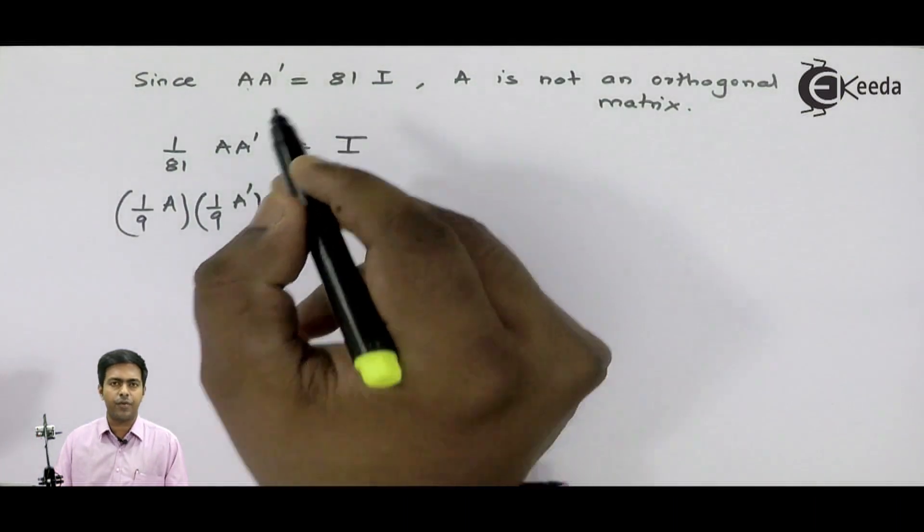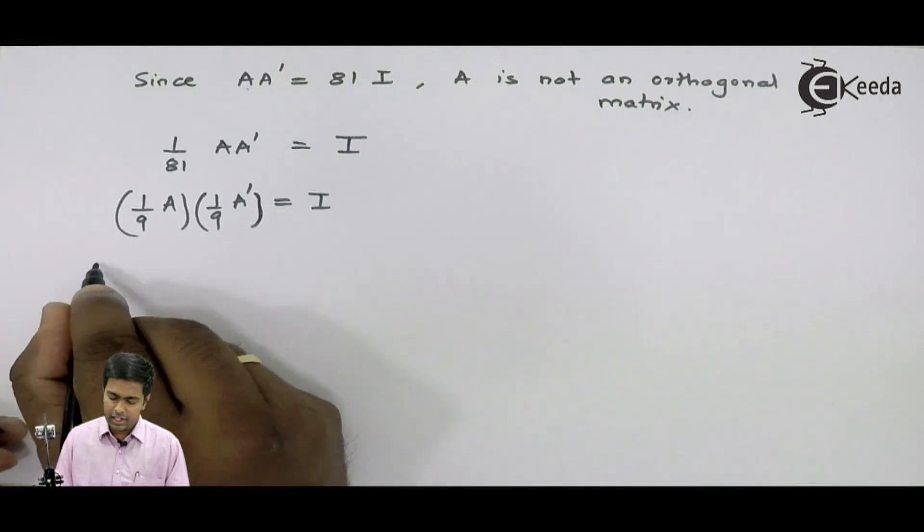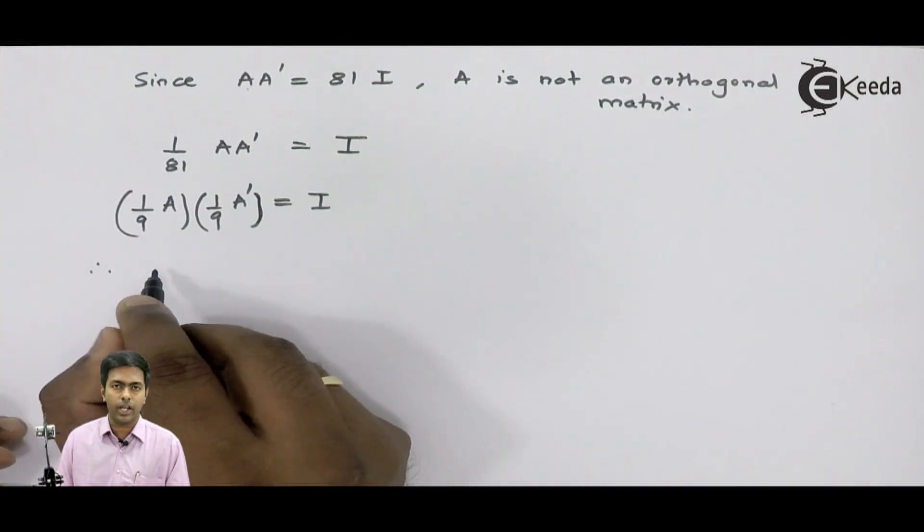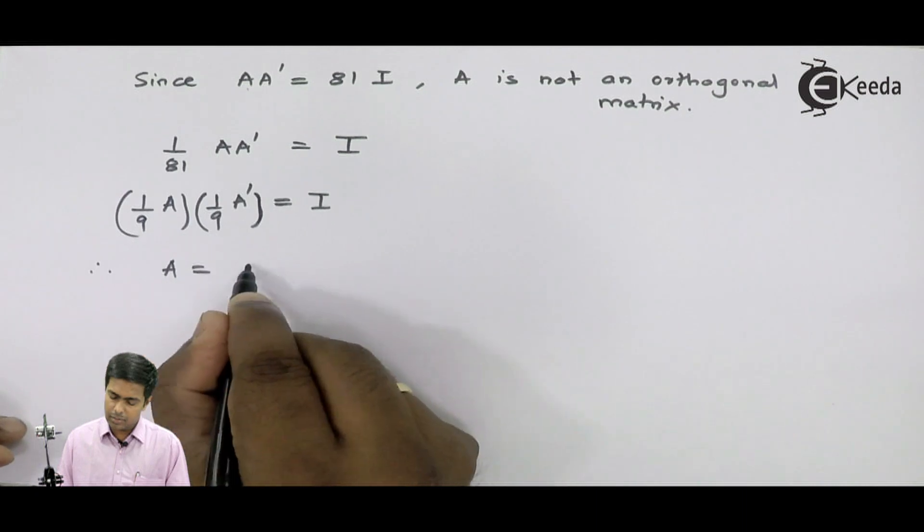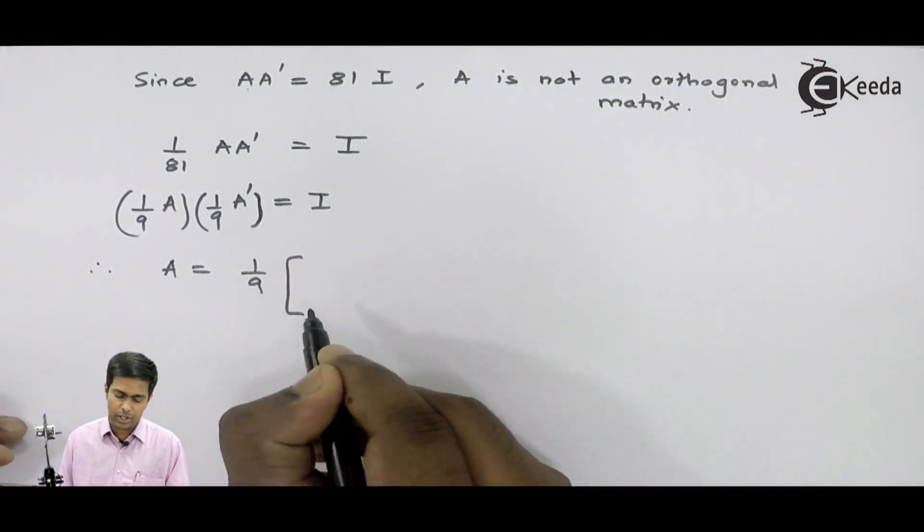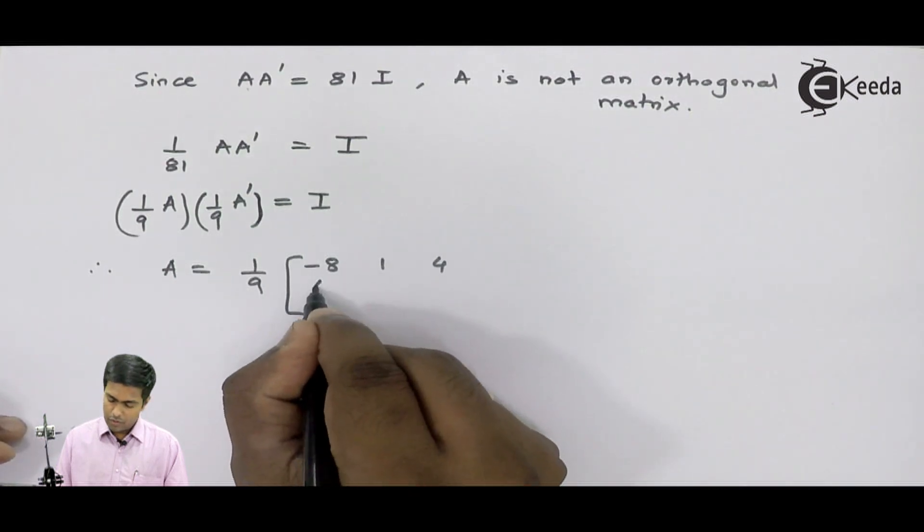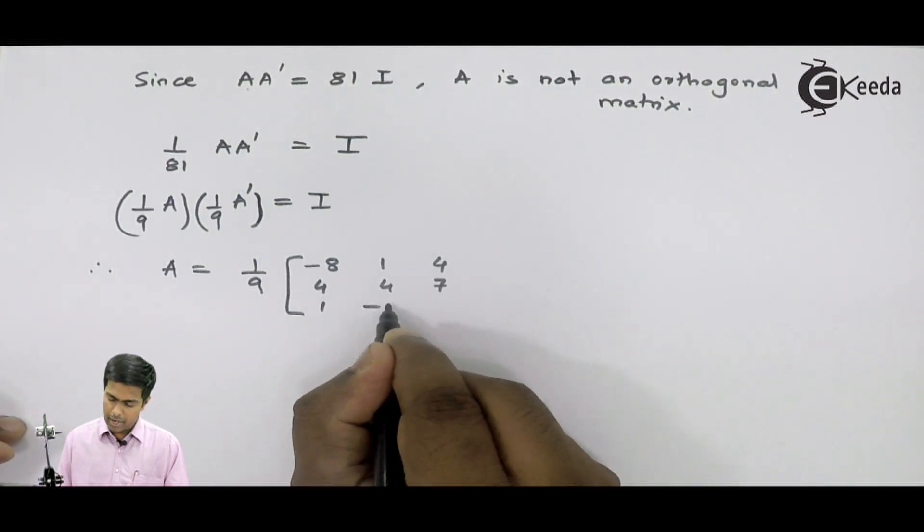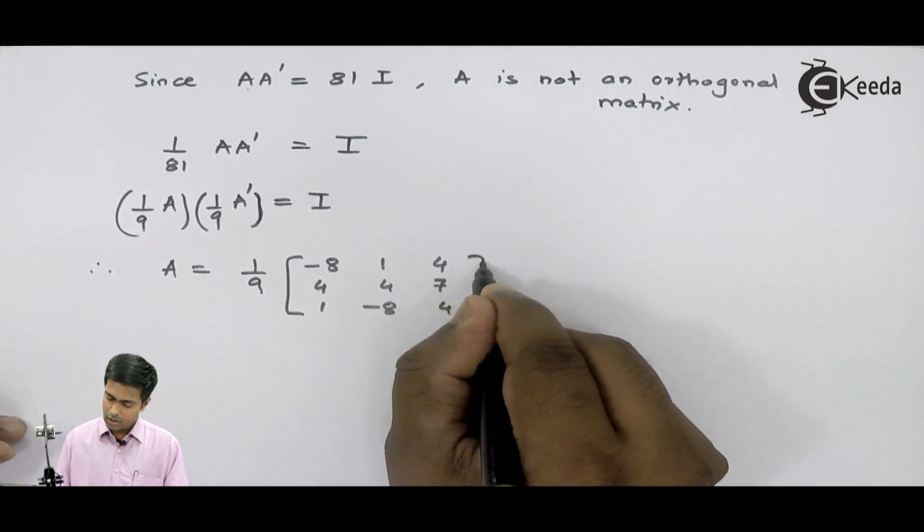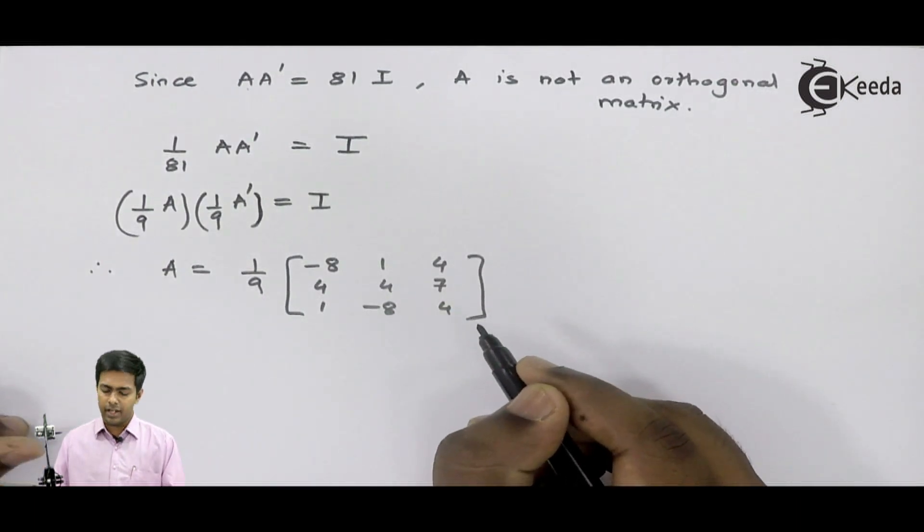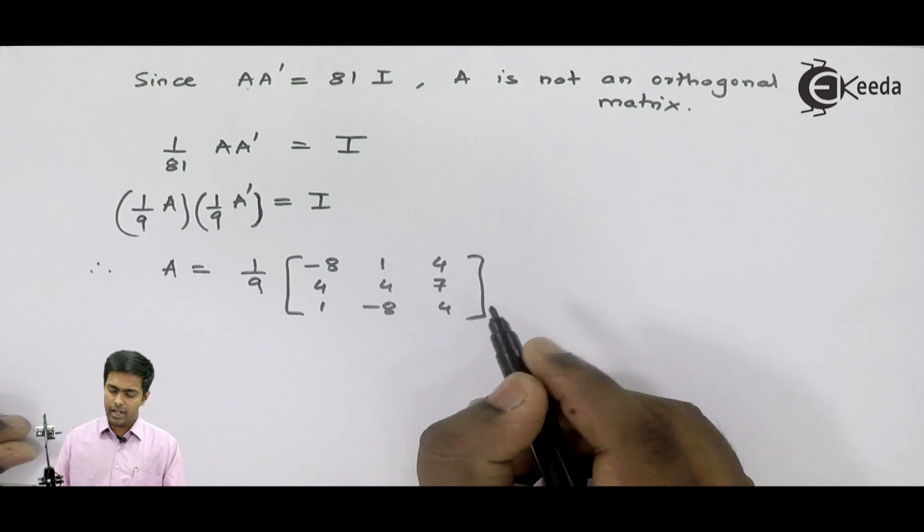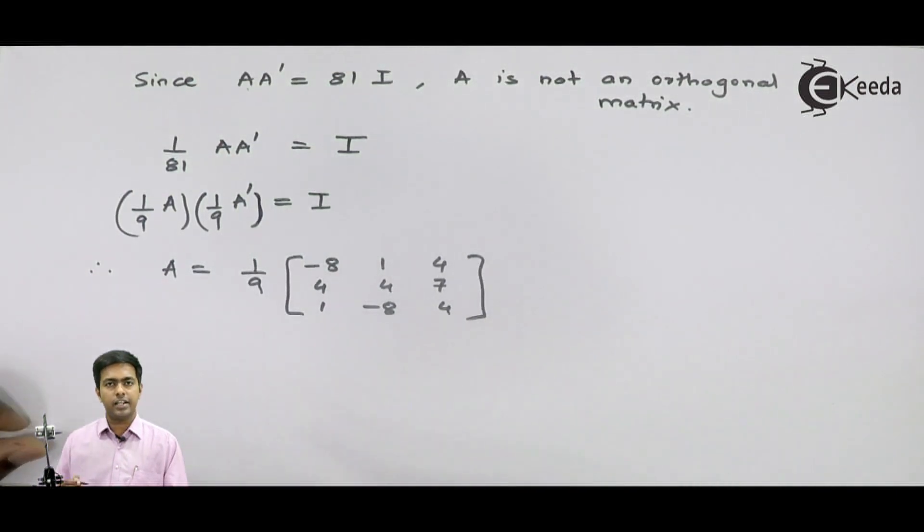How? By shifting this 81 to the left-hand side. Therefore this will become the new A, and that is nothing but 1 by 9 into the original matrix, that is minus 8, 1, 4, 4, 4, 7, and 1, minus 8, 4. If we will make the value of A like this, then definitely we will get A as an orthogonal matrix. Thank you.